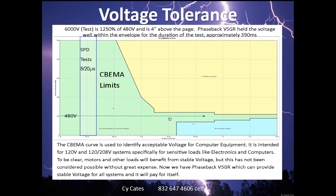The end of the arrow, which represents our test, is 390 milliseconds. Then you see one second and on to 100 seconds the window narrows even more. On the vertical axis, 480 volts represents 100 percent, and at the top of the chart is 500 percent.